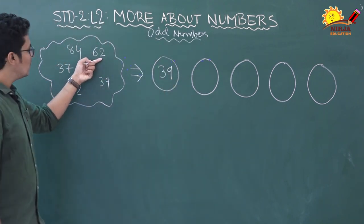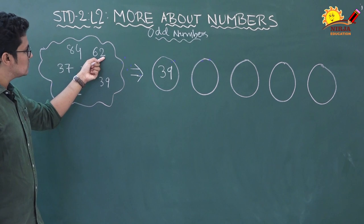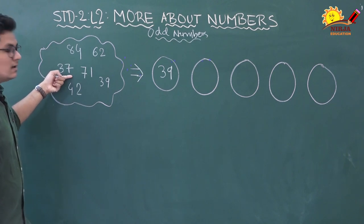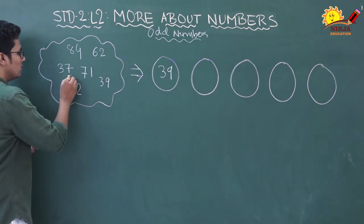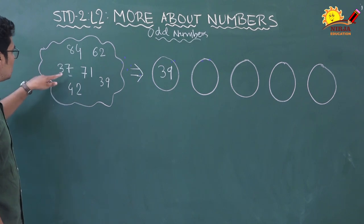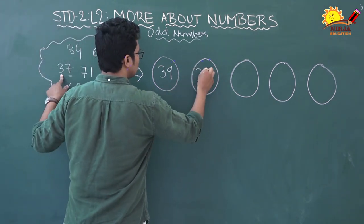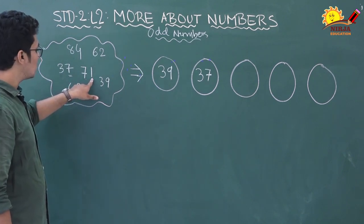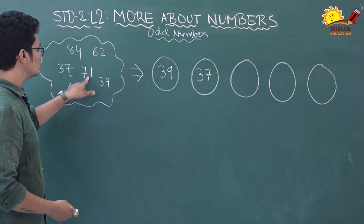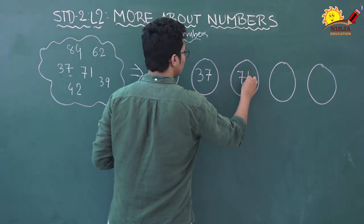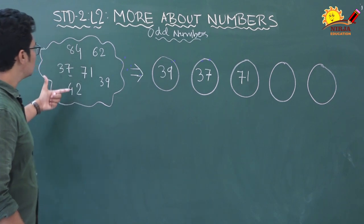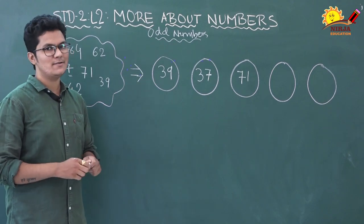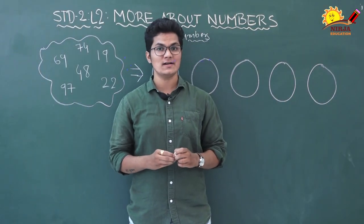Sixty-two has two in the ones place, so it is an even number. Eighty-four is also even. Thirty-seven has seven in the ones place, which is odd, so thirty-seven is another odd number. Seventy-one has one in the ones place, which is odd, so seventy-one is also an odd number. Among all these numbers, these three are odd numbers and the rest are even.